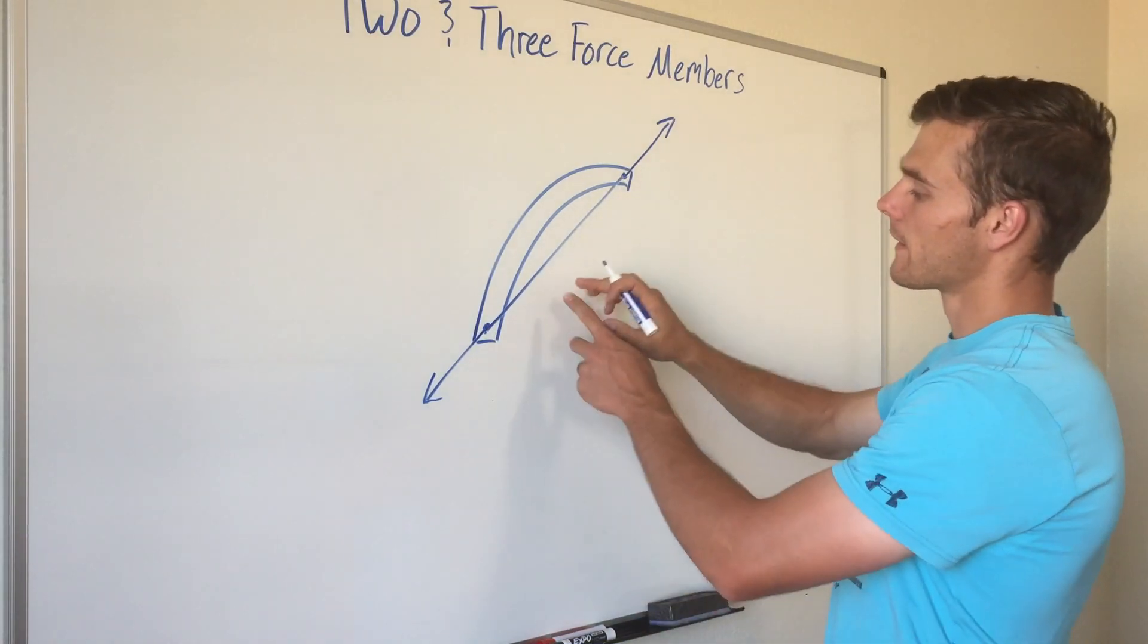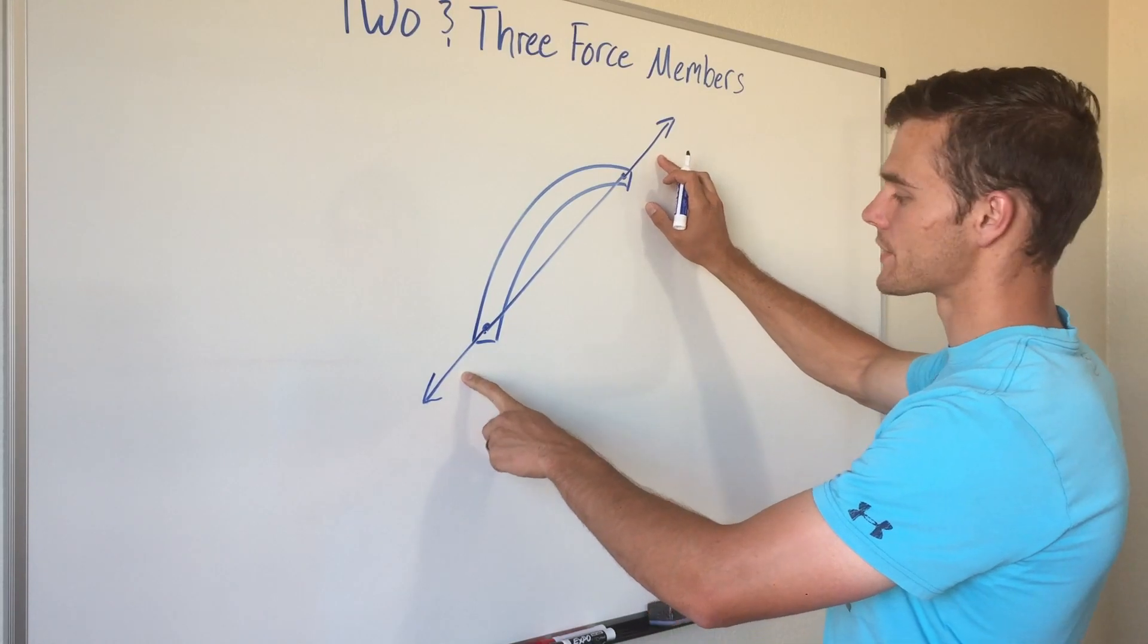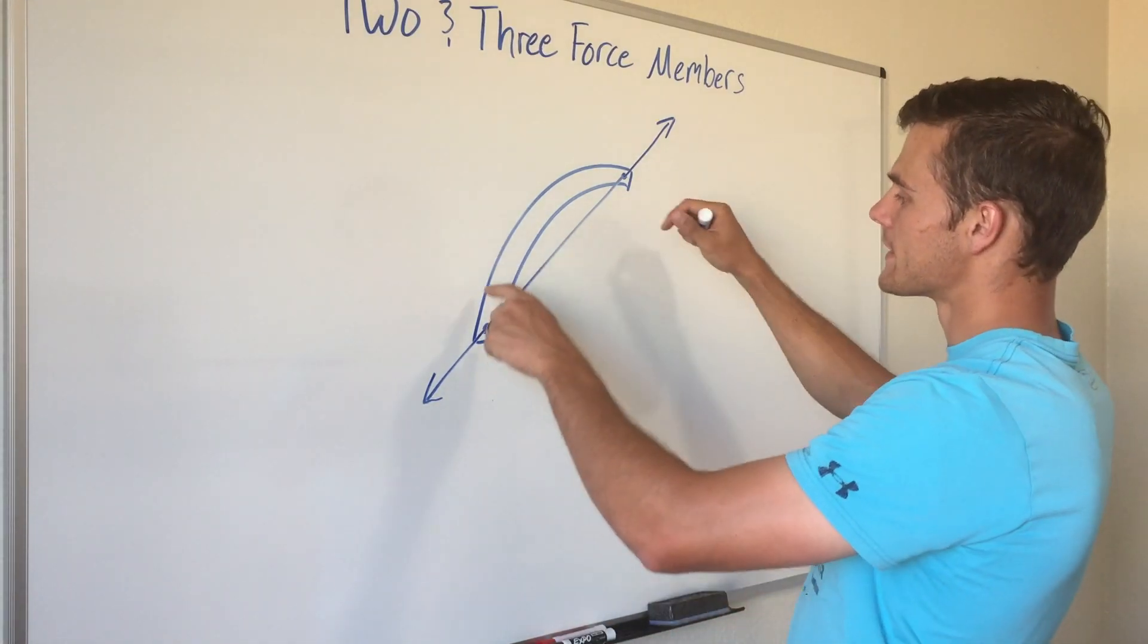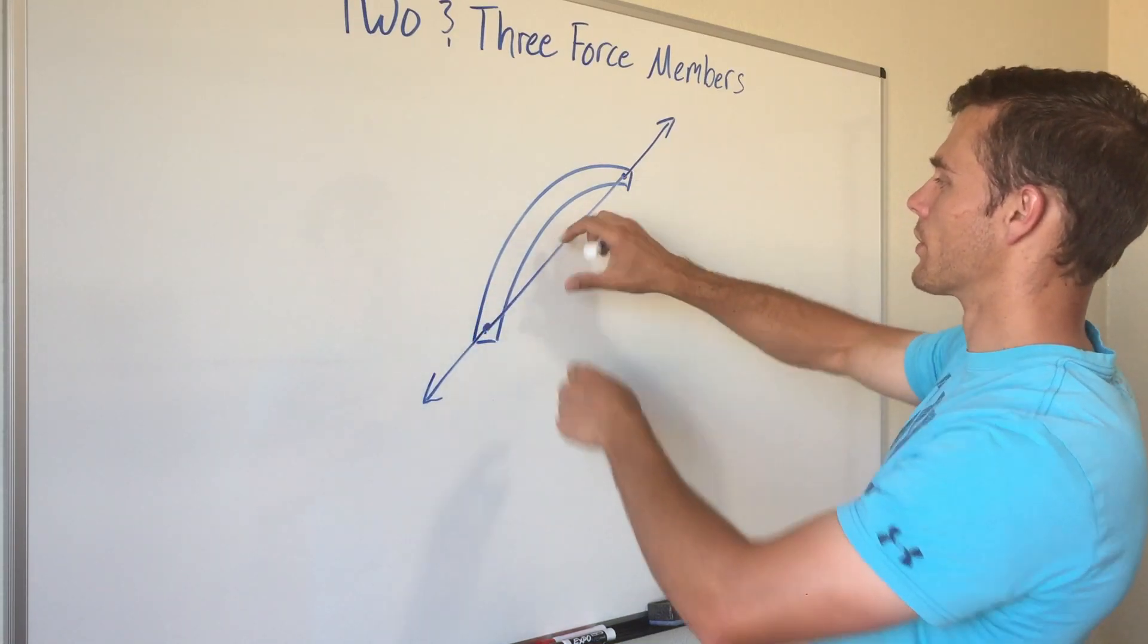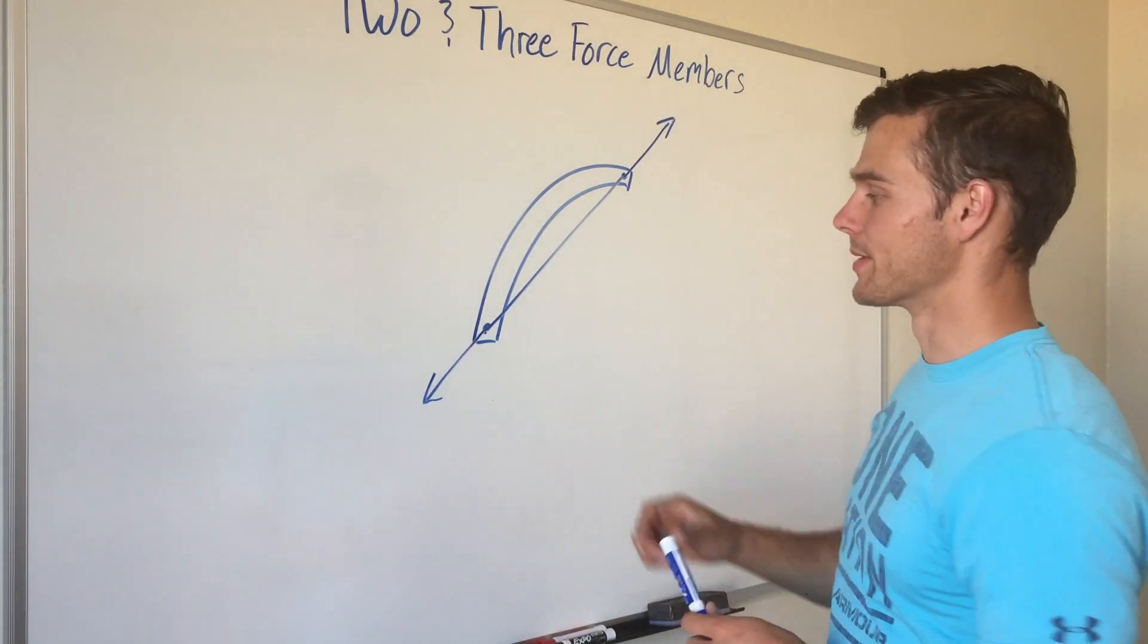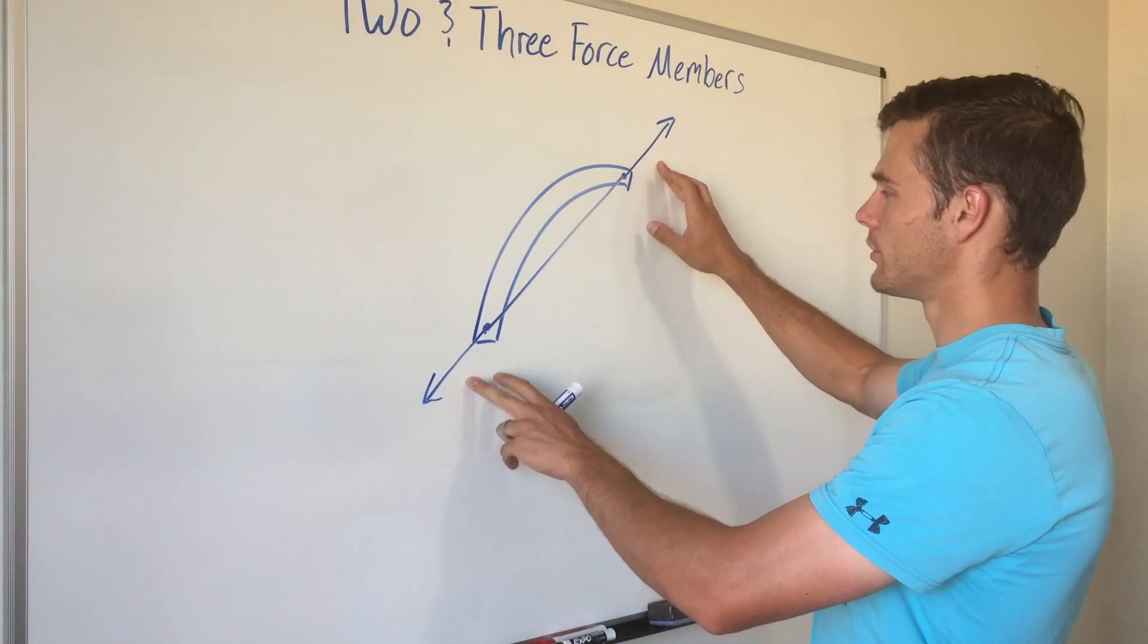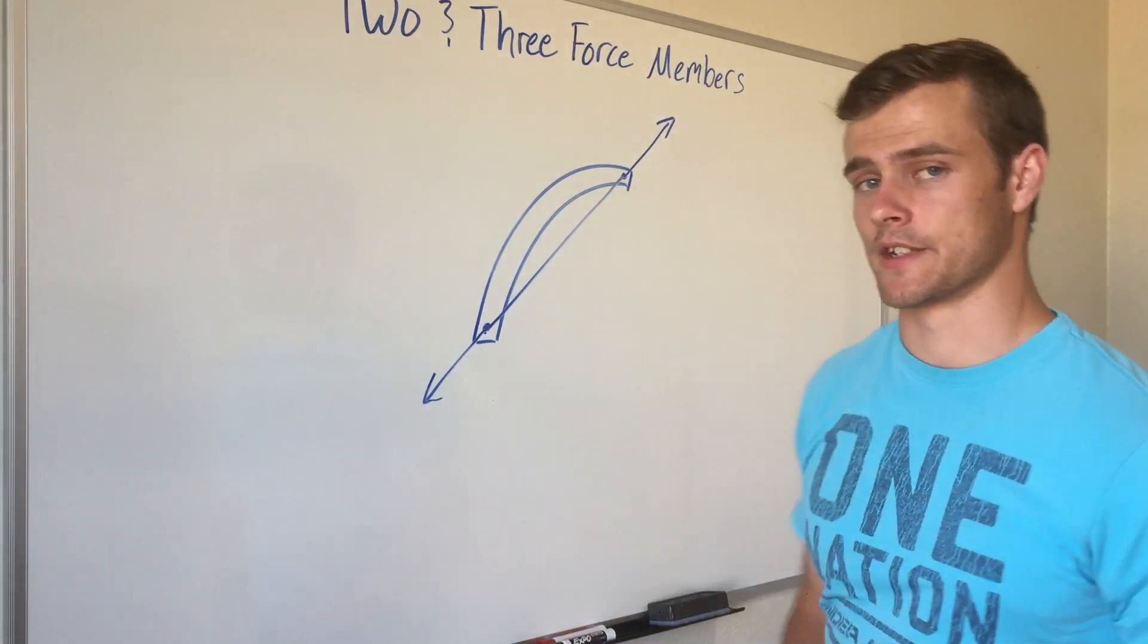well, the line of action of both of these forces has to be along this line. Otherwise, say one was out here, it would cause rotation, it would cause it to rotate this way. And so that would not be in equilibrium. So, again, these two forces have to be equal in magnitude, opposite in direction, and have to be along the same line of action.